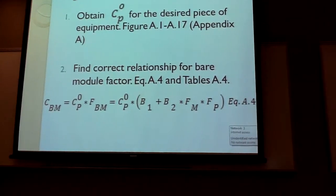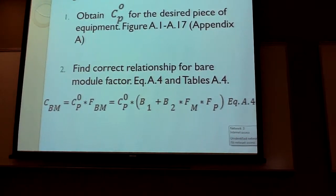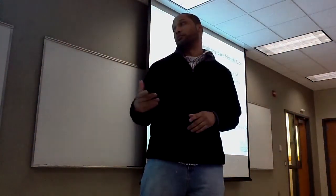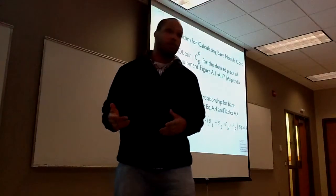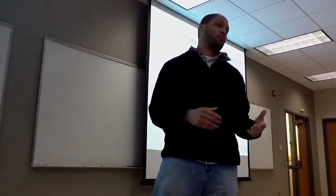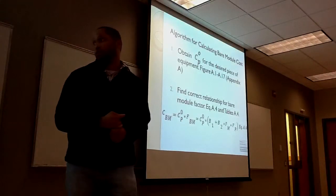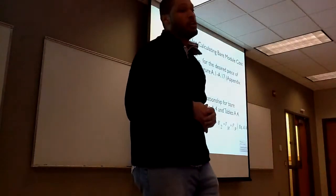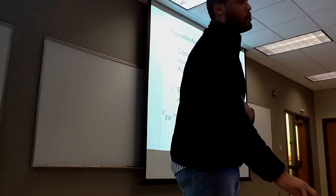The second step would be to find the correct bare module factor. This would be done by using equation 8.4, where your C sub BM is your bare module cost. You would multiply your cost of equipment by the bare module factor F sub BM. Since you wouldn't know your F sub BM directly, you would multiply your C sub P0 by B1 plus B2 — which are normal constants — multiplied by your material factor times your pressure factor. You would use table 8.4 to help with this.